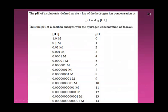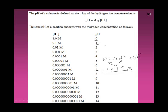pH is just an easier way of expressing concentration than using molarity. If I have something with a pH of 7, that means my concentration of H+ is 1 times 10 to the minus 7 molar. If something has a pH of 1, that's a 0.1 molar acid — 1 times 10 to the minus 1. If the pH is 3, it's 1 times 10 to the minus 3 molar.